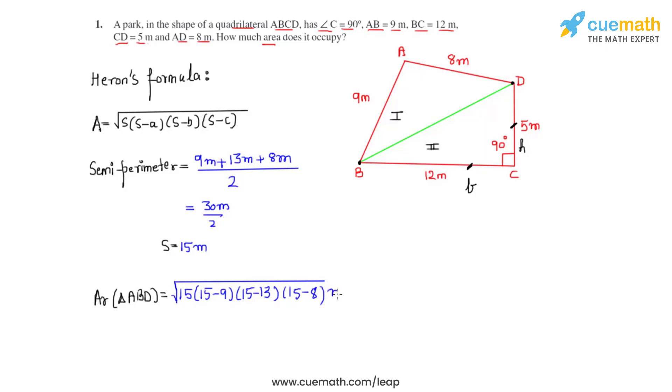That on further calculation gives us √[15 × 6 × 2 × 7] meter square. That on further calculation comes as 6√35 meter square which is approximately equal to 35.496 meter square.